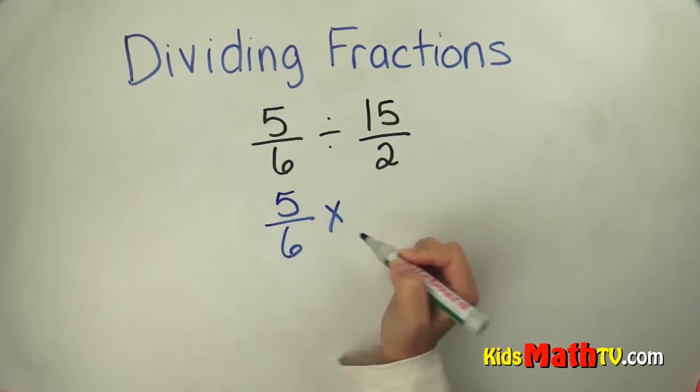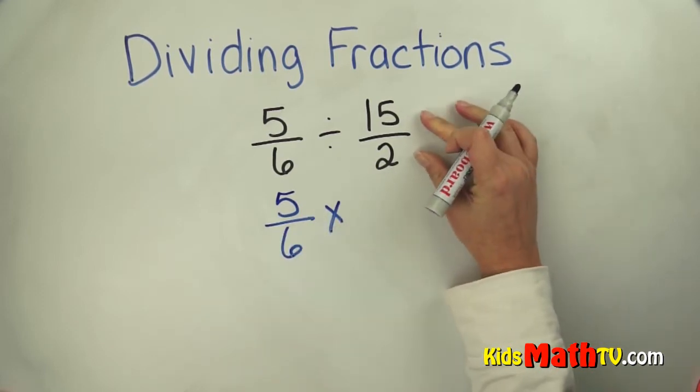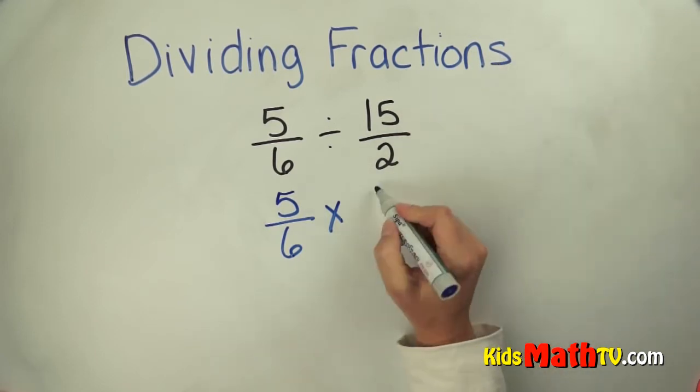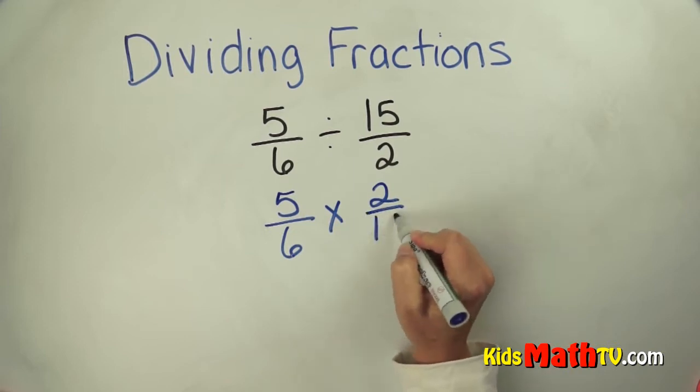We change it to a multiplication sign, and then we use the reciprocal of the second fraction, or we flip it over. So the reciprocal of 15 over 2 is 2 over 15.